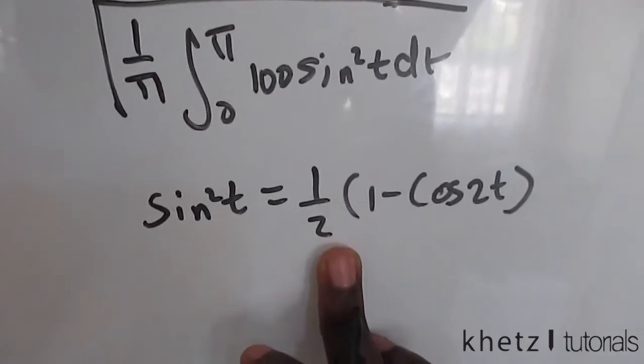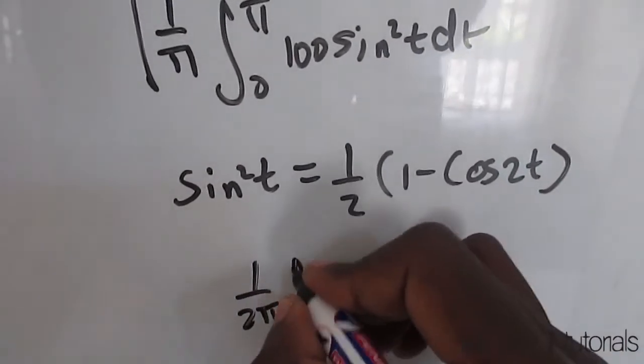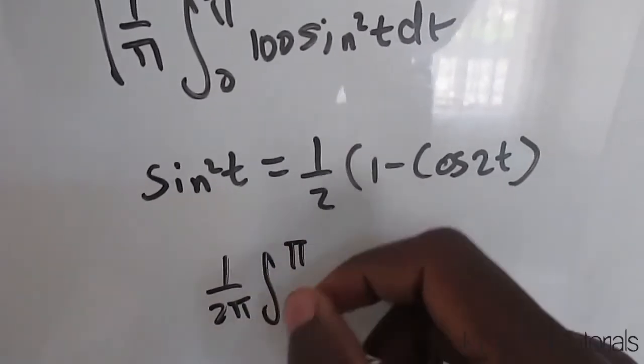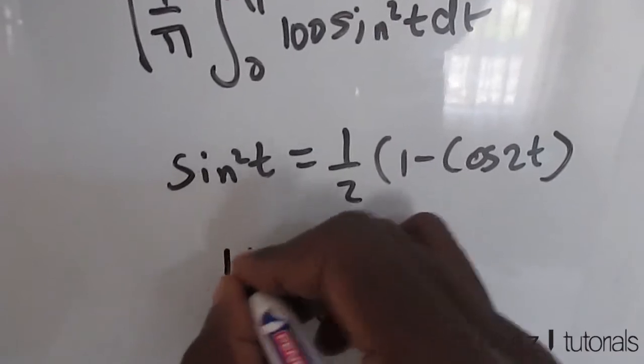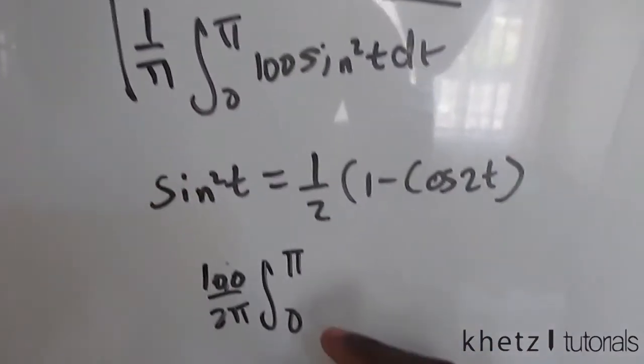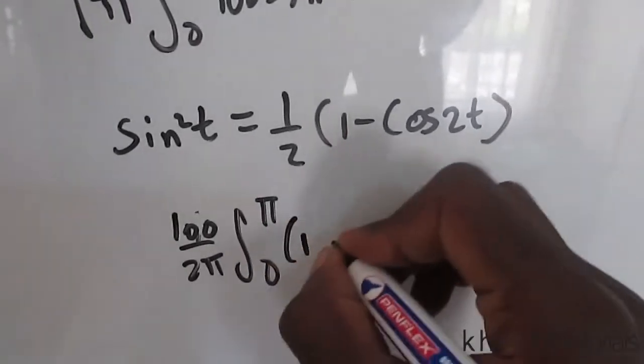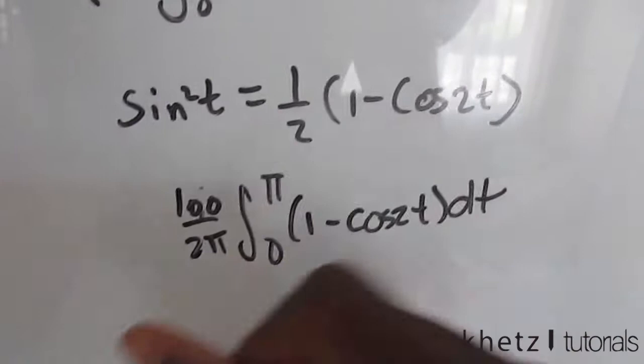You're going to take this half outside and you're going to have 1 over 2 pi, integral from 0 to pi. Taking the 100 to that side and the half to that side as well, here we're only going to have 1 subtract cosine of 2t dt, square root of that.